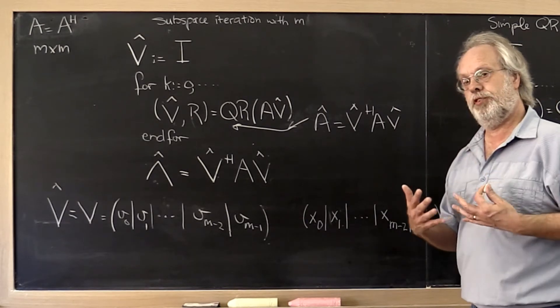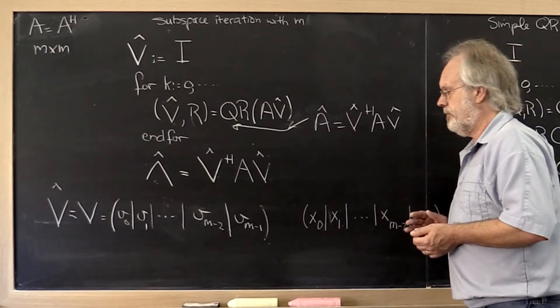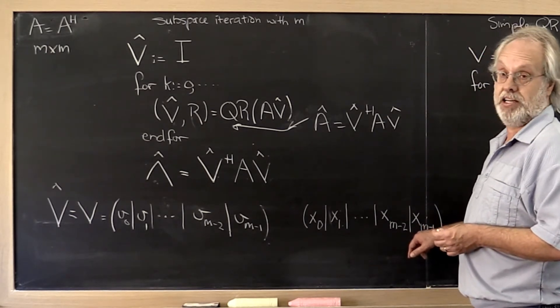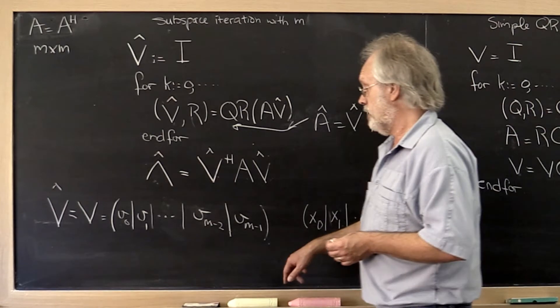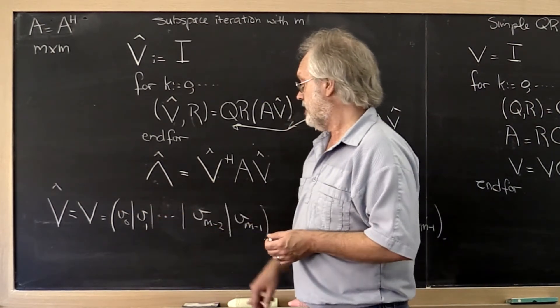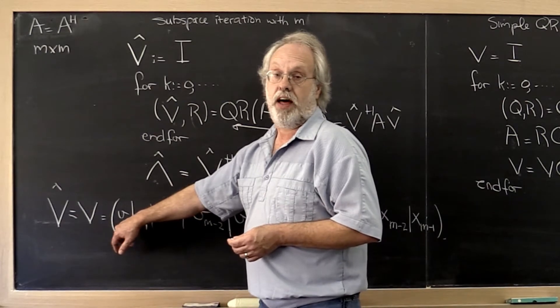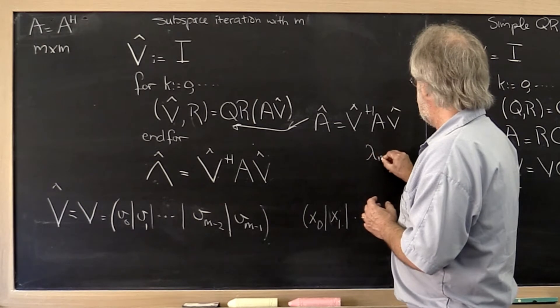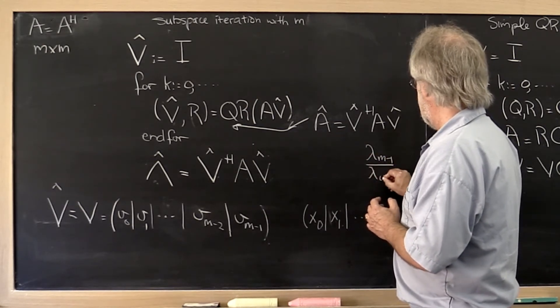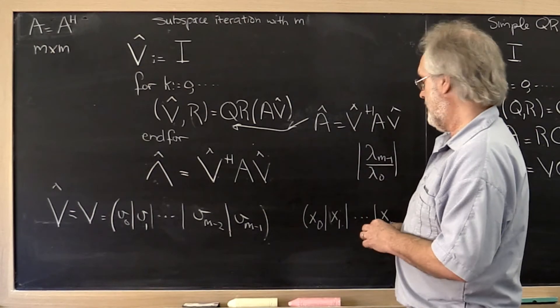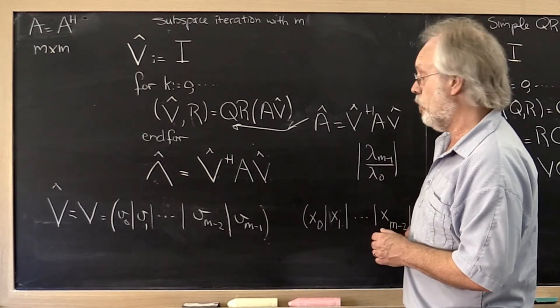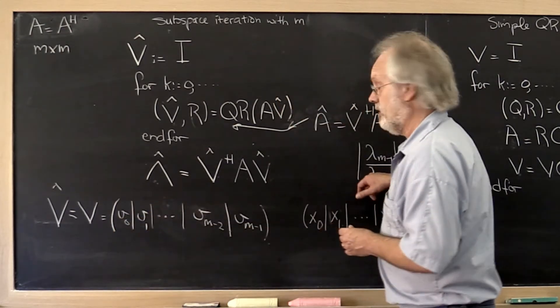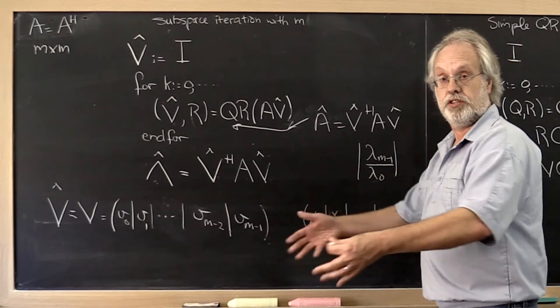Now it's actually more beneficial to look at this backwards. If you ask the question how fast does the component in the direction of xm-1 disappear from any arbitrary of these vectors, let's say v0, that is actually dictated by the ratio between lambda m-1 divided by lambda 0 in absolute value. That's how fast the component in the direction of xm-1 disappears from the vector v0. That's the constant that showed up in the convergence analysis.